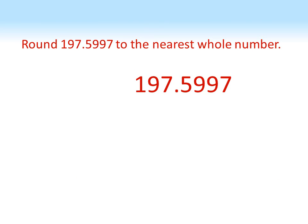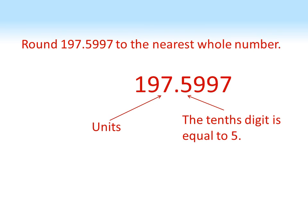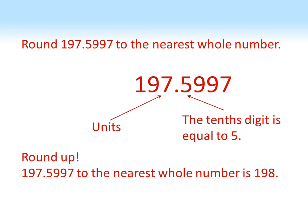Now let's try rounding 197.5997. The units digit is 7 and the tenths digit is 5. As we said before, if the tenths is equal to 5 we round up, so that 7 increases and we get 198.